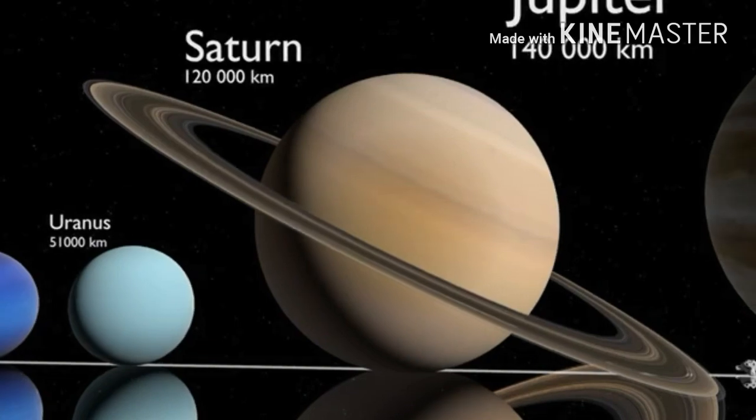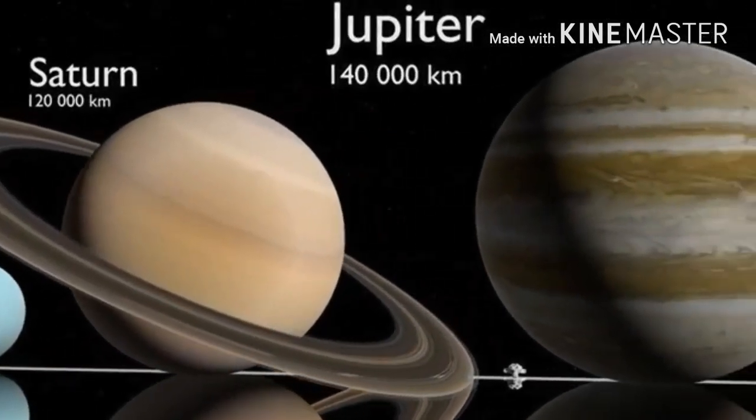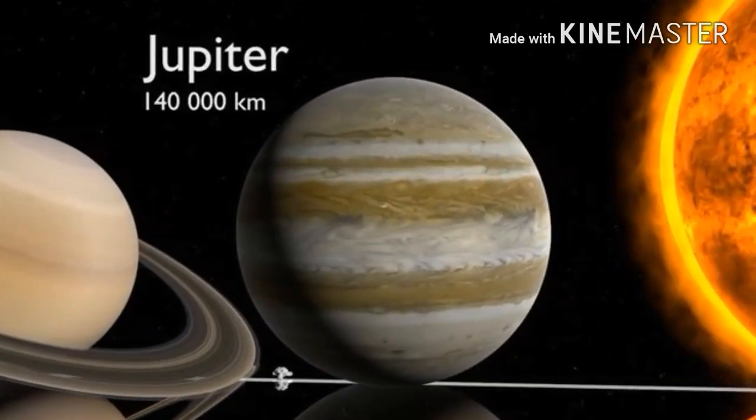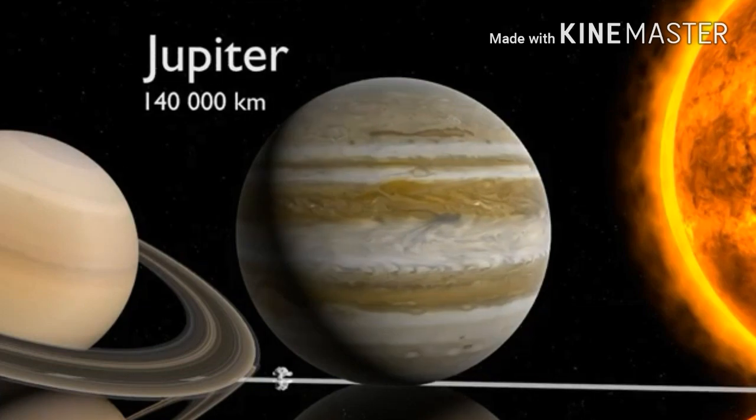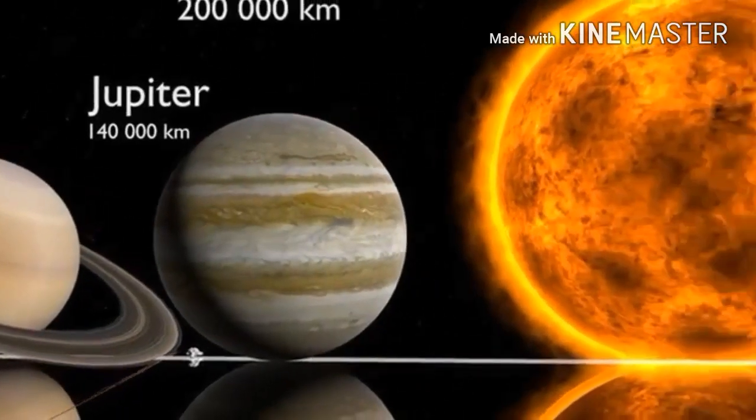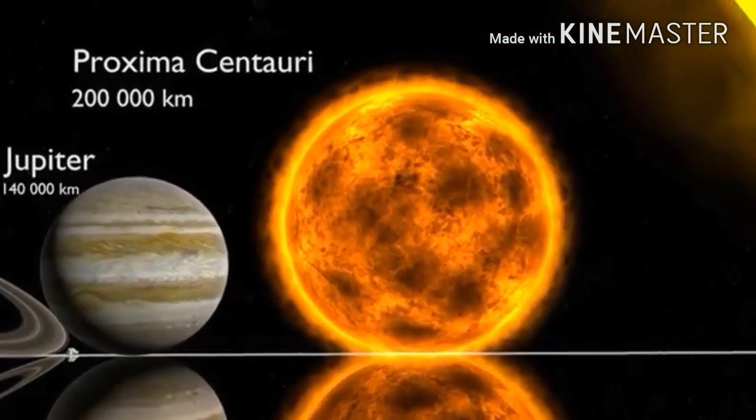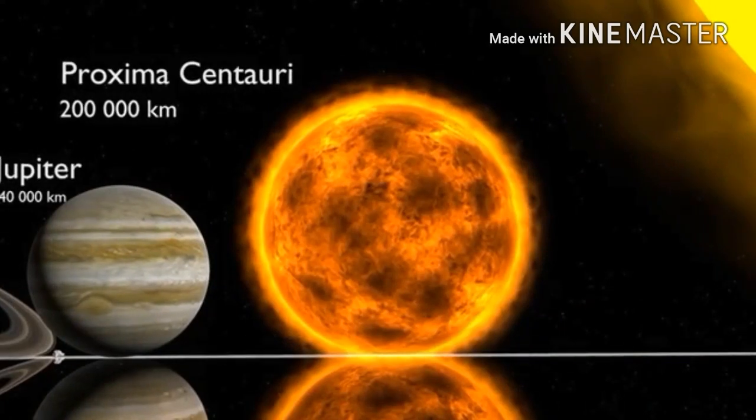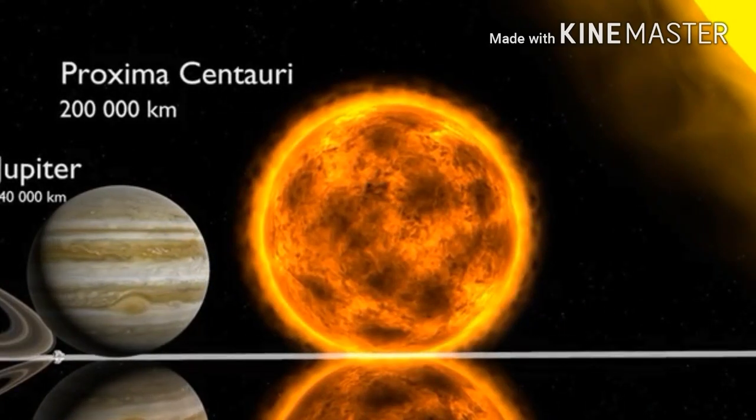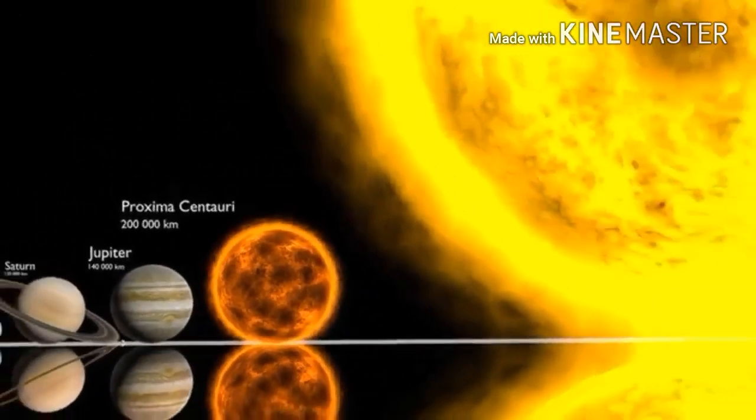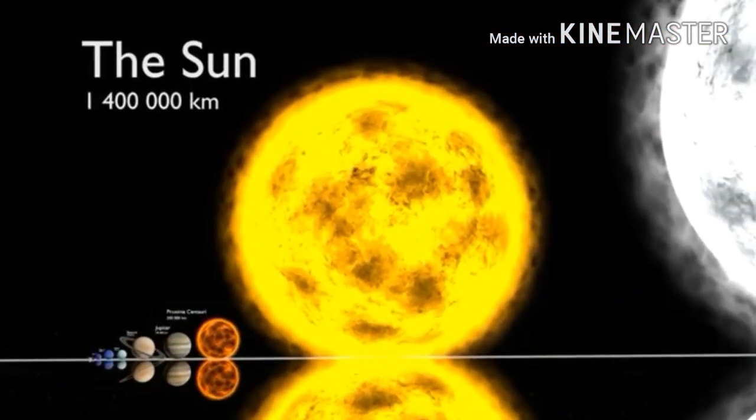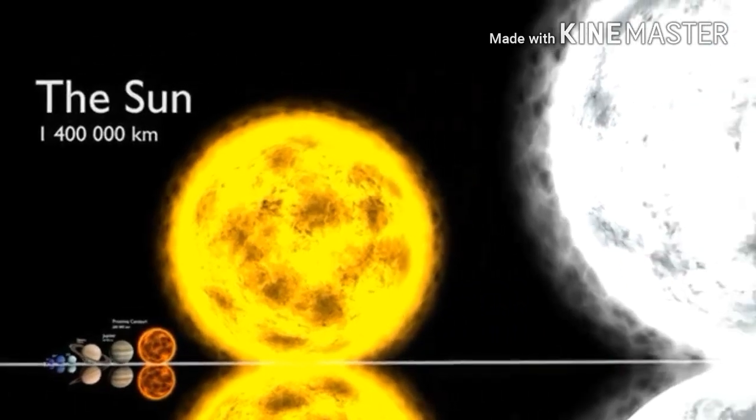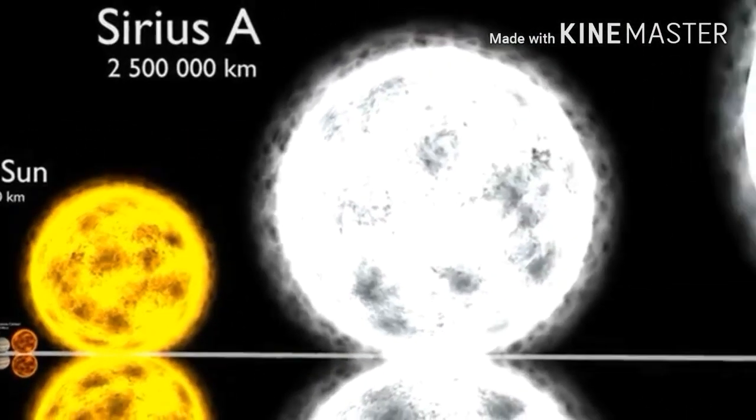120,000 kilometers. Jupiter, 140,000 kilometers. Wait, what's that picture between Saturn and Jupiter? What is that? All right, here goes Proxima Centauri. Oh, that's our sun!